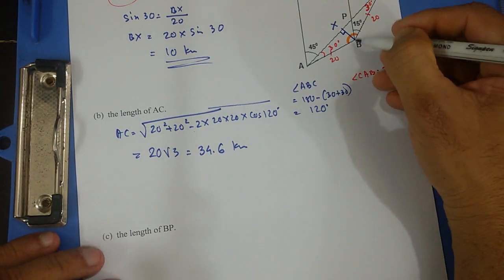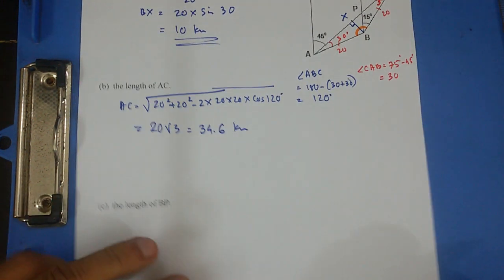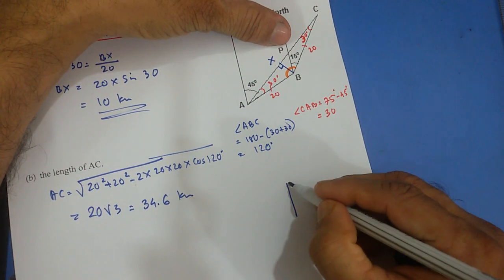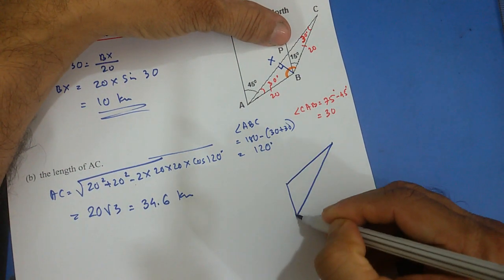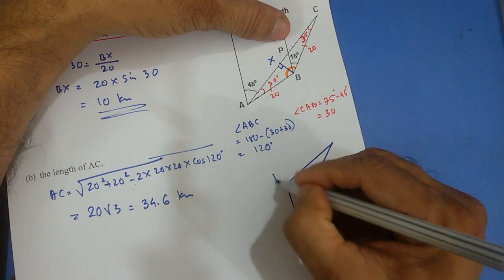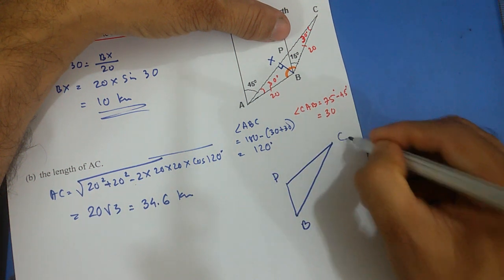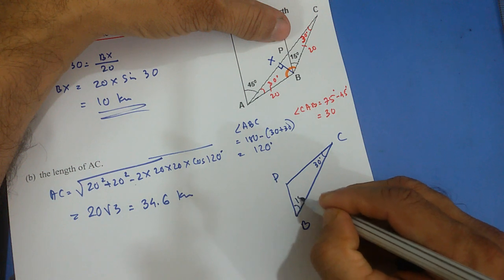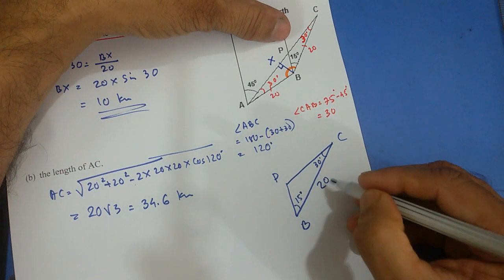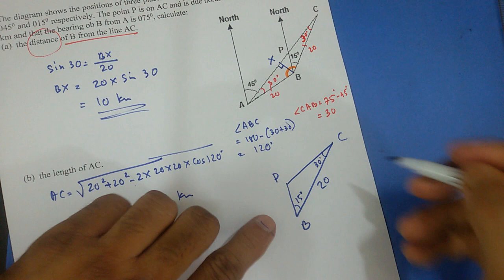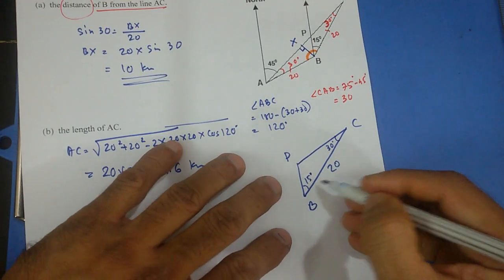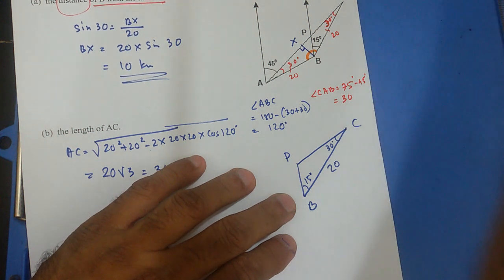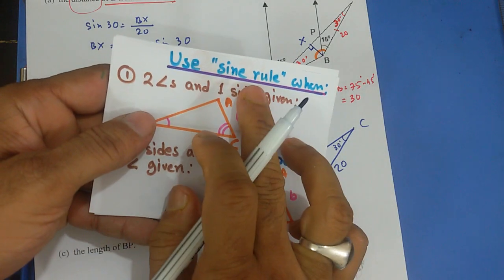The length BP. I need to find out this length BP. Now there are so many ways you can do this. If you look closely, see that BP. This is 30 degrees, and this is 15 degrees. And I have this 20. I need BP. So two angles and one side is given. When we have two angles and one side, we are going to use sine rule.